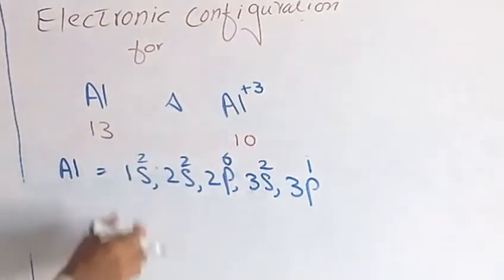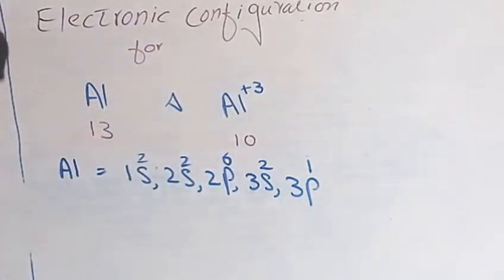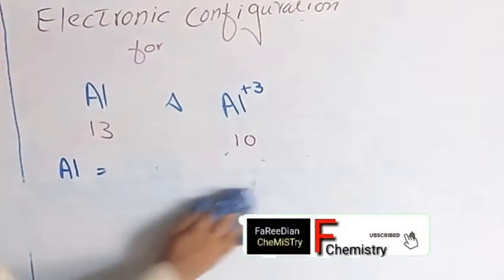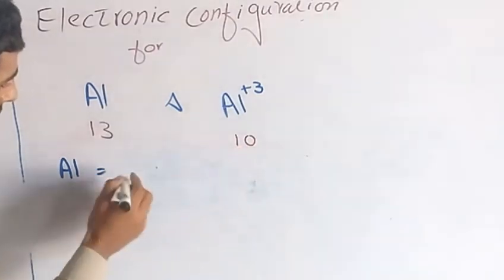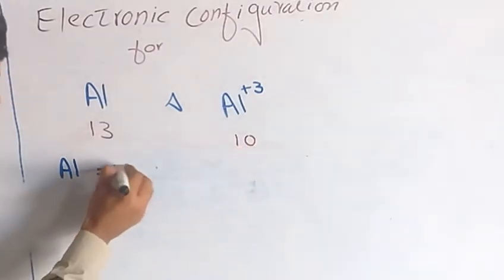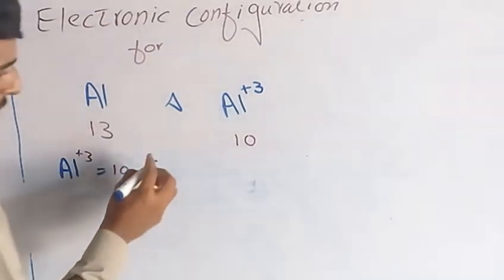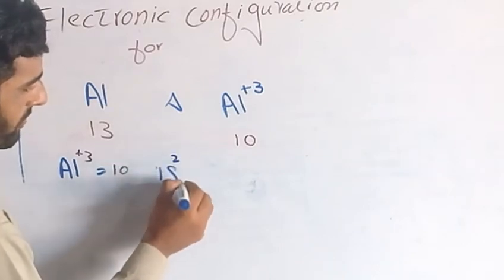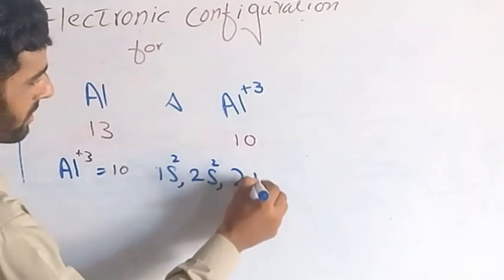Now we start the electronic configuration of aluminium plus 3. Now we move on aluminium plus 3, its atomic number is 10. First of all, 1s, 2s, 2p 6.